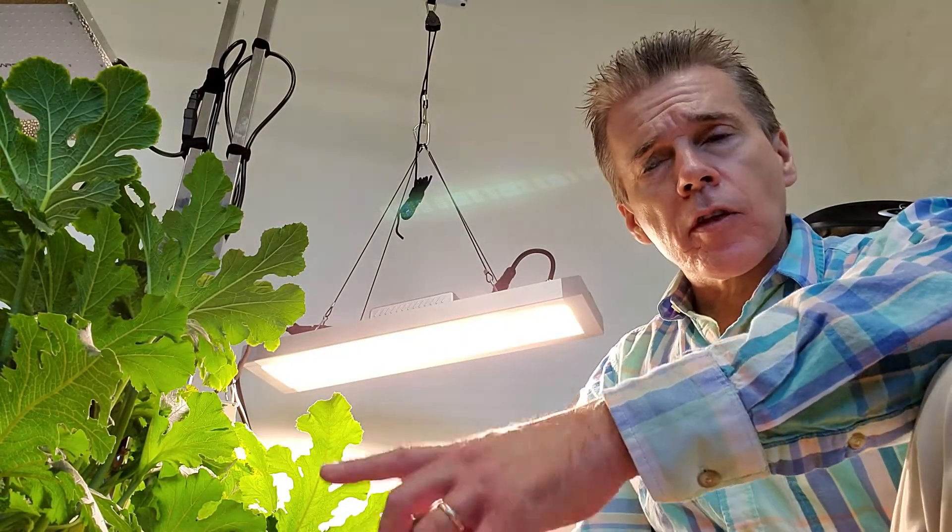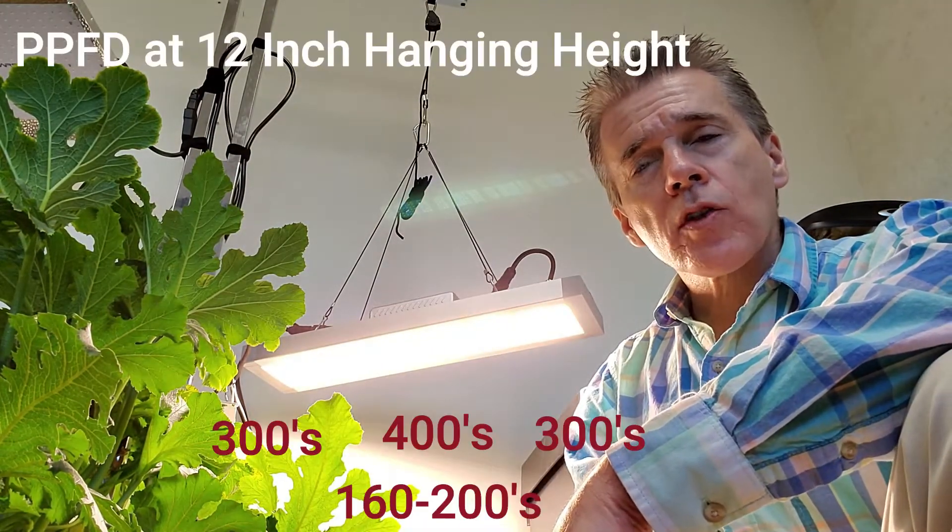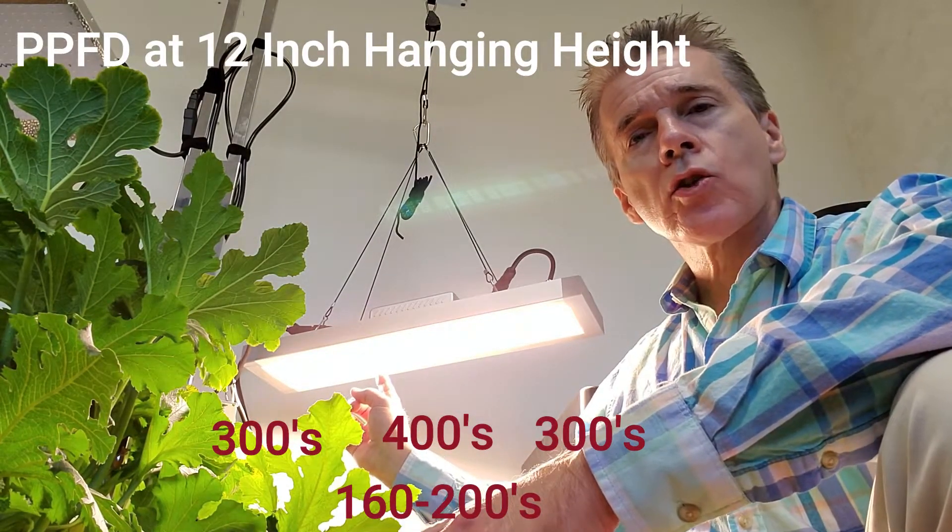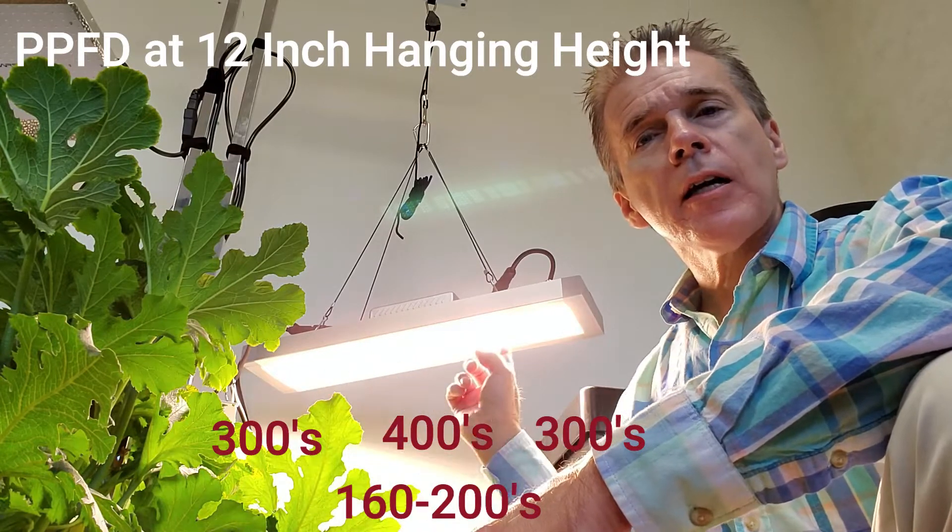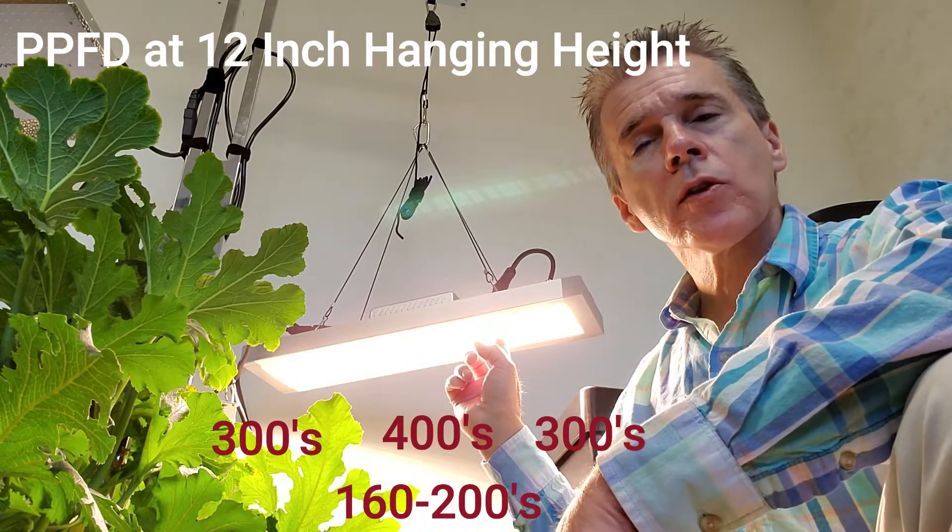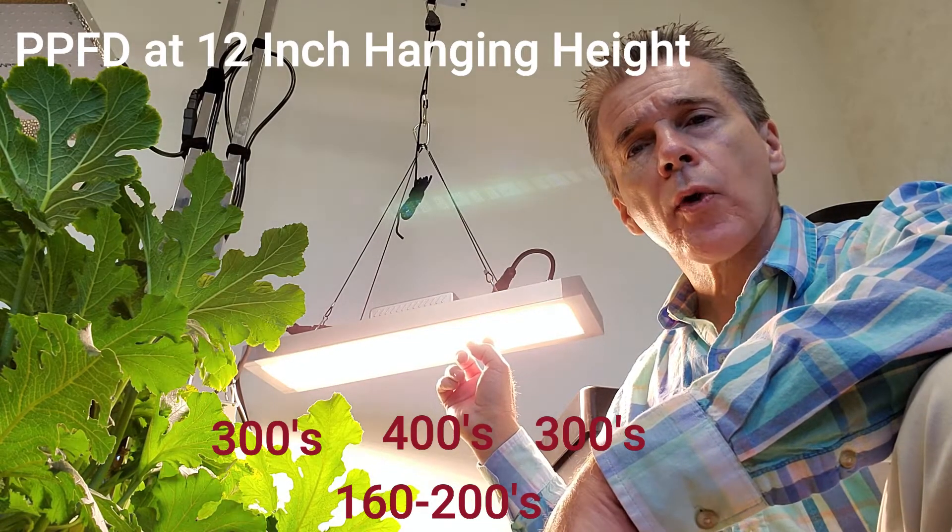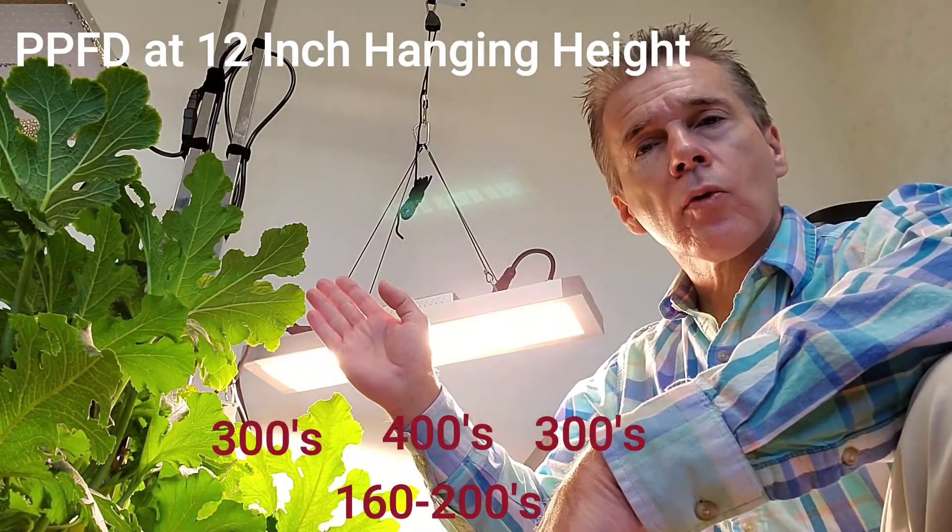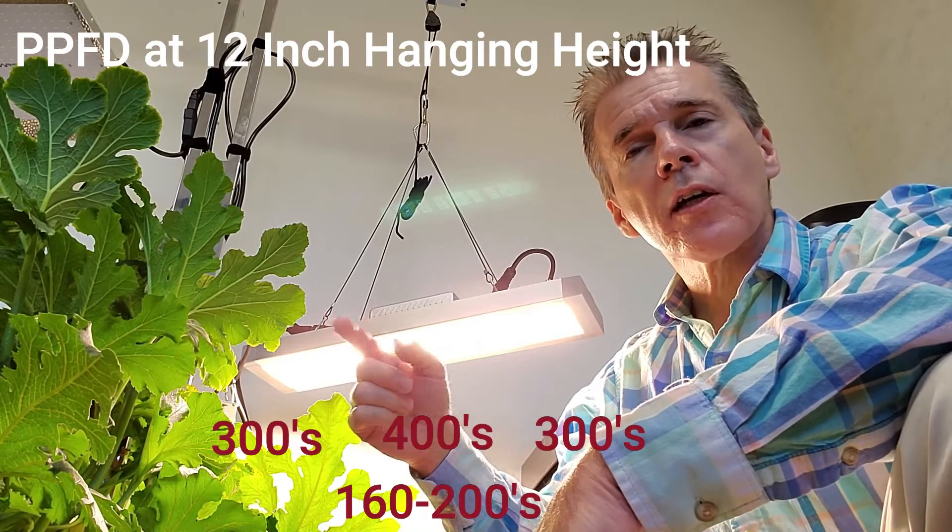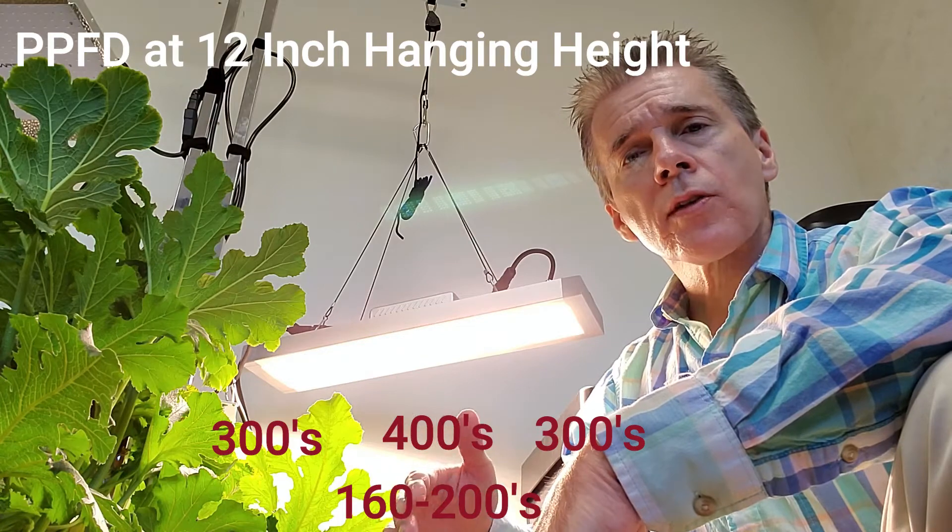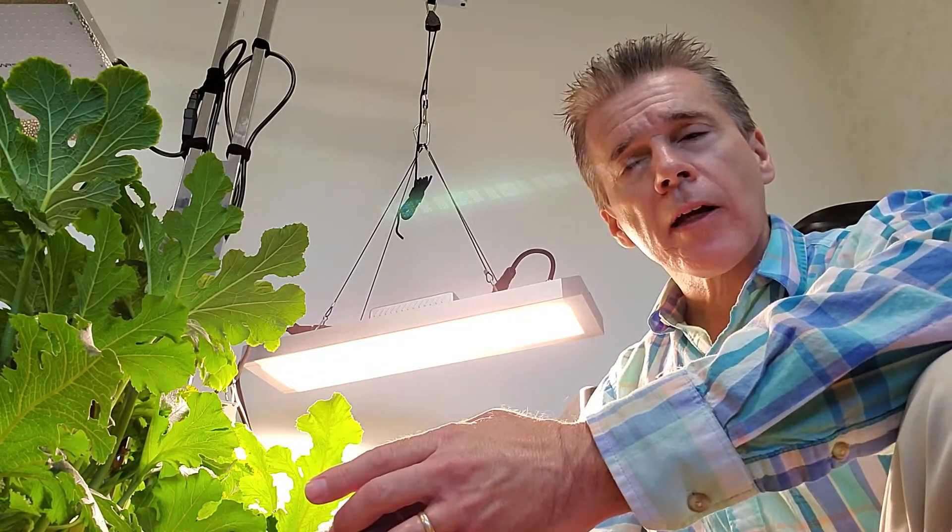Checking out the PPFD output of the light at about 12 inches above canopy. Directly in the middle, picking up around the 400 range. On the very ends where the light is coming in from one side and not the other, it drops off into the 300, low 300 range. And then if you come off of the light towards what would be the weakest side of a 2x2 grow tent, it drops down closer to the 160 to 200 range. Now with the walls of a grow tent, that will reflect the light back in, so I would expect that to pick up just a little bit.